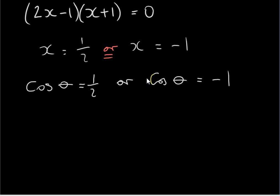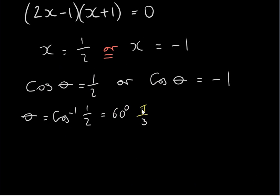Now we need to solve these two equations for θ, where θ must be between 0 and 360 degrees. If you go to your calculator and get the inverse cos of 1/2, your calculator will give you the acute angle solution, which is 60 degrees. In radians, 60 degrees is π/3, since π radians is 180 degrees, and 180 divided by 3 is 60. Now we use the CAST rule to get other solutions. We want cosθ to equal +1/2, so the sign of this number is important.